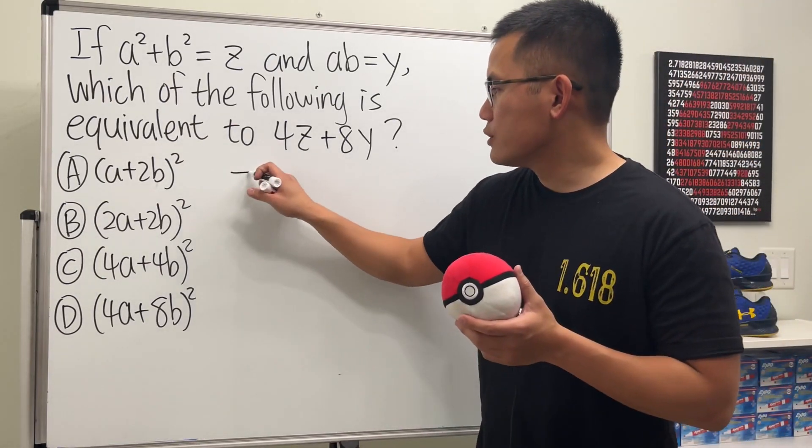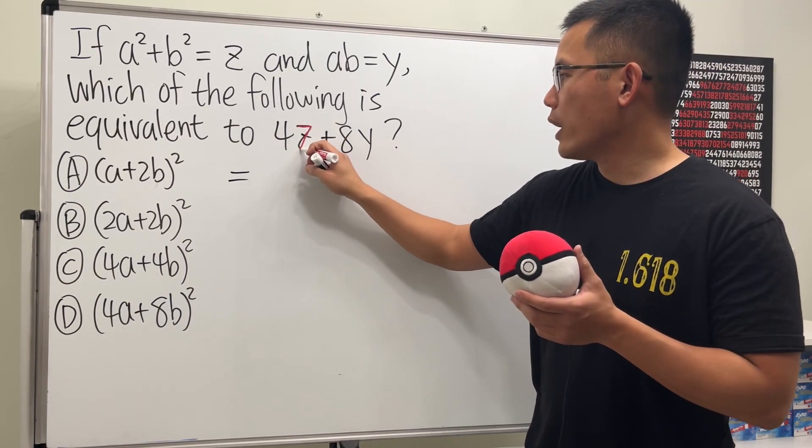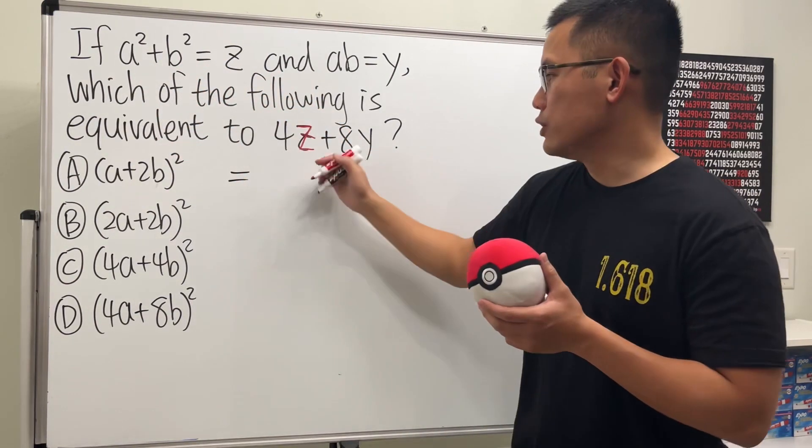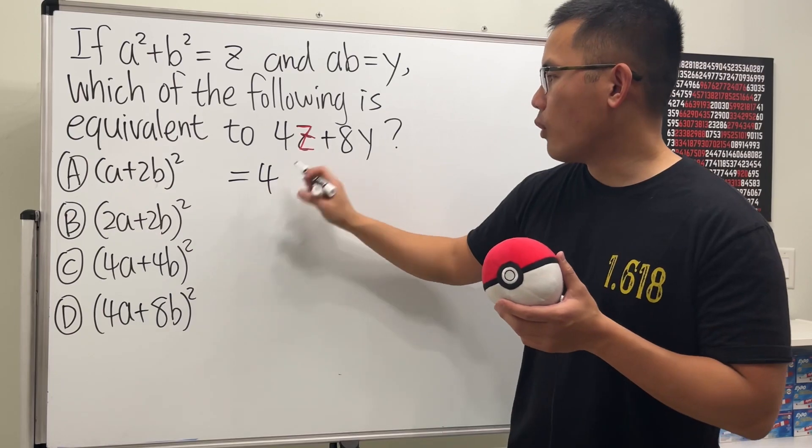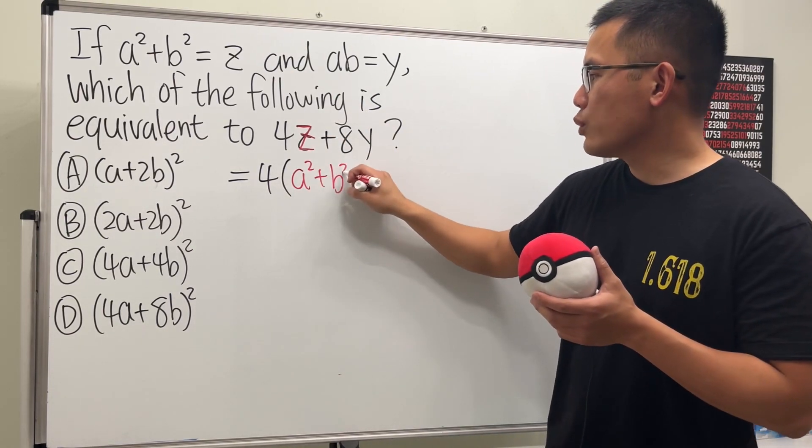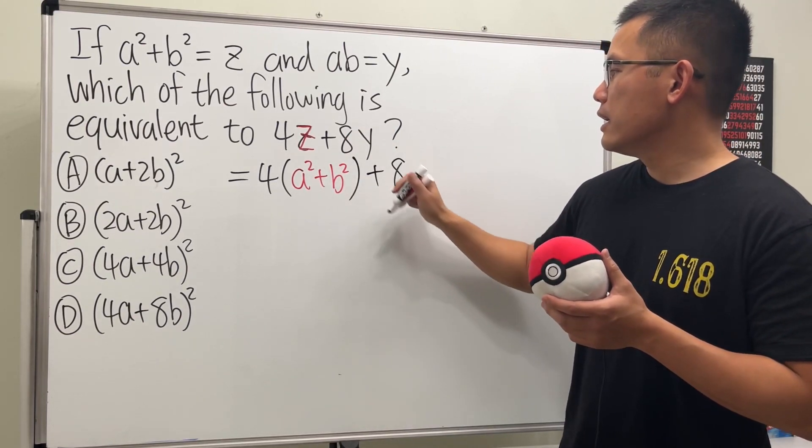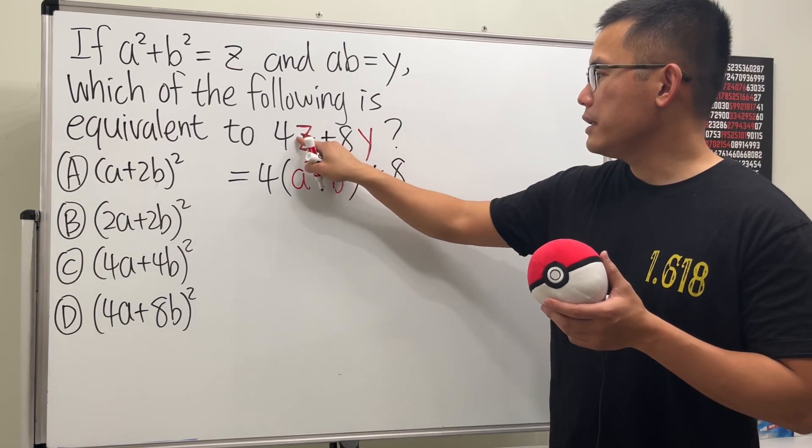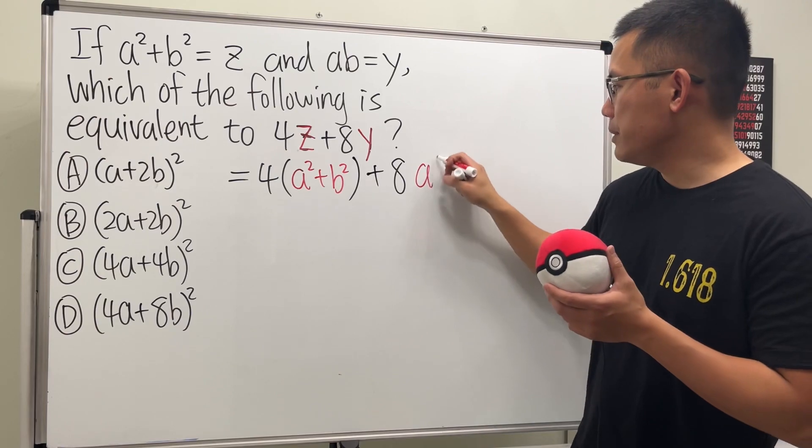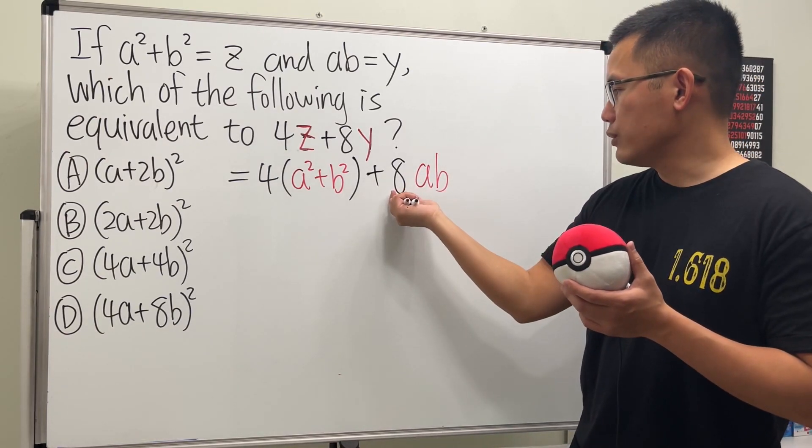This is pretty straightforward. Because we have 4z, this z here, we know it's given to be a squared plus b squared, so we can just put that down. We have 4, and let's open the parentheses, a squared plus b squared inside. Then we continue. We add 8, and then look at the y. For the y here, it's the same as a times b, so we put ab here. And this parentheses is not necessary because we just have to multiply.